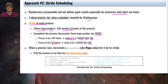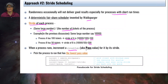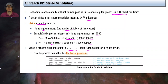If process B has 50 tickets, its stride is 10,000 / 50 = 200. When a process runs, we increment a counter variable — also known as a pass value — by its stride. Initially the pass value is zero, and then we increment it by the stride value. The algorithm picks the process with the lowest pass value to run next.